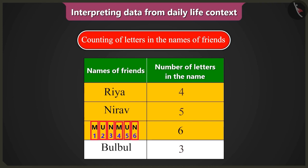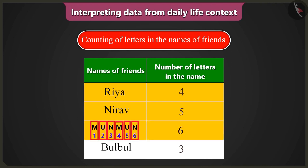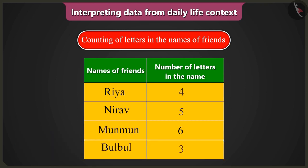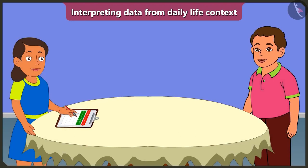Oh yes, I have to count all the letters that come in the name of Munmun, no matter how many times they come. So here the number of letters will be six. Now tell me, how many letters are there in the name Bulbul? There are a total of six letters, not three. Well done, Bubbly. Thank you.